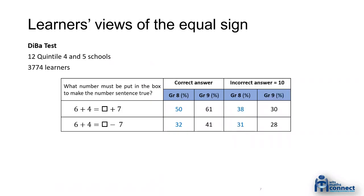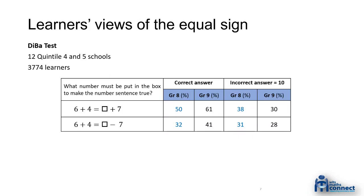If you look at the classic error, learners work left to right: 6 + 4 = 10, and they stick 10 in the box ignoring what comes next. Nearly 30% of grade nines are still making that error. Many learners have what we call a 'do something' view of the equal sign — you do something and get an answer on the right-hand side. There are more grade nines with an equivalence or balanced view, but it's not stable: when we change from addition to subtraction, results drop significantly. This is something critical in primary school maths.